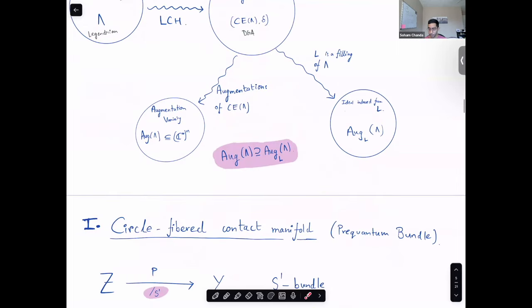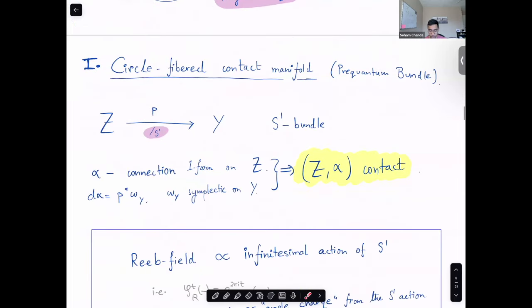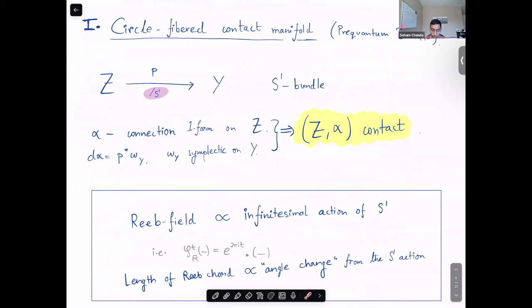Okay, now the big picture is done and let's get into the setup. The setup is the ambient contact manifold is a circle-fibered contact manifold or pre-quantum bundle. This is a manifold Z, which is a circle bundle over Y. Here Y is symplectic with some symplectic form omega_Y, which I'll assume to be integral from now on. Alpha is a connection one-form on Z such that the curvature is given by the pullback of the symplectic form. These two conditions enforce that Z comma alpha, the pair, is contact.